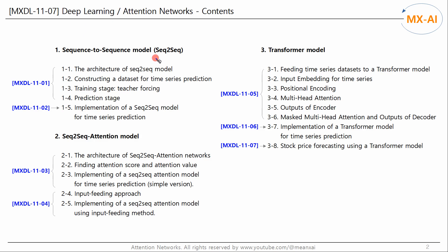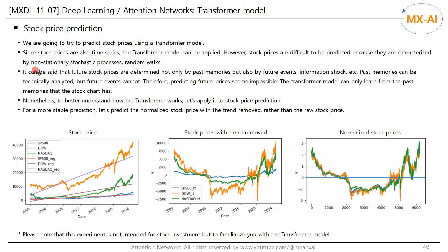Since stock prices are also time series, we can apply all the Seq2Seq attention and Transformer models we have looked at in this series to try to predict stock prices. Stock prices are difficult to predict because they are characterized by non-stationary stochastic processes — that is, random walks.